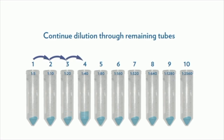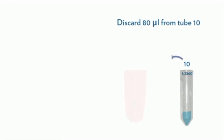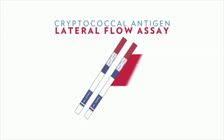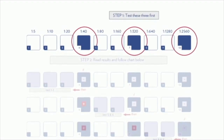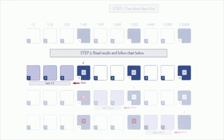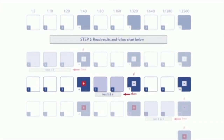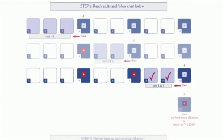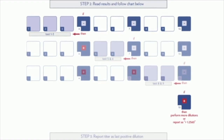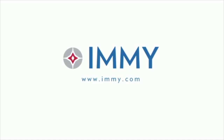Discard 80 microliters from tube number ten for a final tube volume of 80 microliters. To reduce the total number of strips required, follow the titration algorithm: begin by placing test strips in tubes numbered 4, 7, and 10 and wait 10 minutes. If tubes 4, 7, and 10 are negative, test tubes 1, 2, and 3. If tube 4 is positive and tube 7 is negative, test tubes 5 and 6. If tubes 4 and 7 are positive and tube 10 is negative, test tubes 8 and 9. If tube 10 is positive, perform more dilutions or report as greater than 1 to 2560. Conclude by reporting the titer as the last positive dilution.